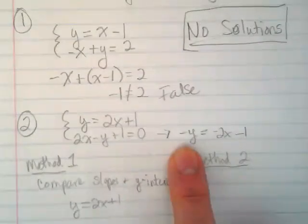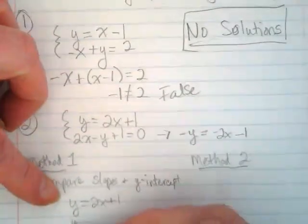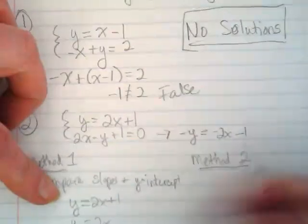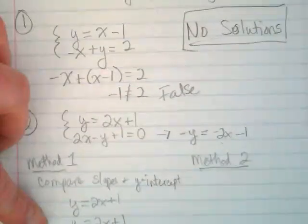So now I have to divide the whole thing by negative 1, which is just going to switch all of the symbols. So I'm going to rewrite the second equation down here as y is equal to positive 2x plus 1. And what do you notice about those two? They're the same.